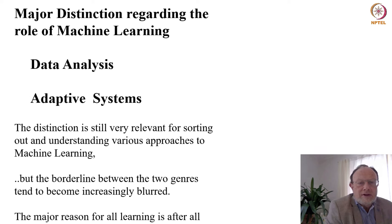The distinction between data analysis and use of machine learning in adaptive systems is still a useful distinction. It's still very relevant for sorting out and understanding various approaches to machine learning, but of course the borderline between the two genres tends to become increasingly blurred. Ten to twenty years ago there was a clear demarcation line between the areas, but not so today.